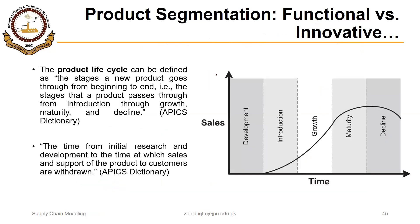Product life cycle is defined as the stages a new product goes through from beginning to end — from introduction, through growth, maturity, and decline. On a chart with time on the x-axis and sales on the y-axis, there are no sales during R&D. Sales begin in the introduction phase, increase through growth, peak at maturity, and then decline until the product is withdrawn or a new variant is introduced.